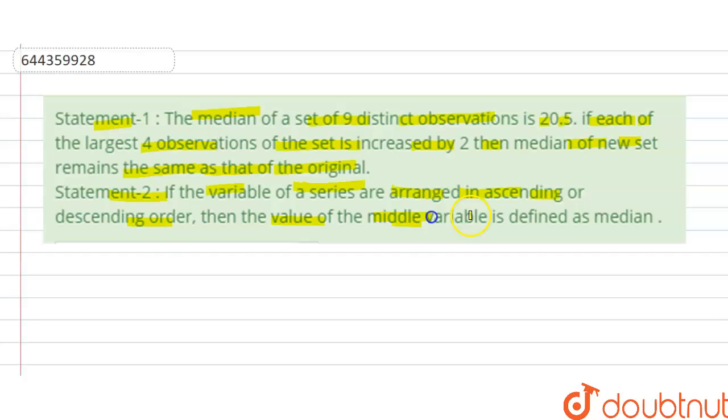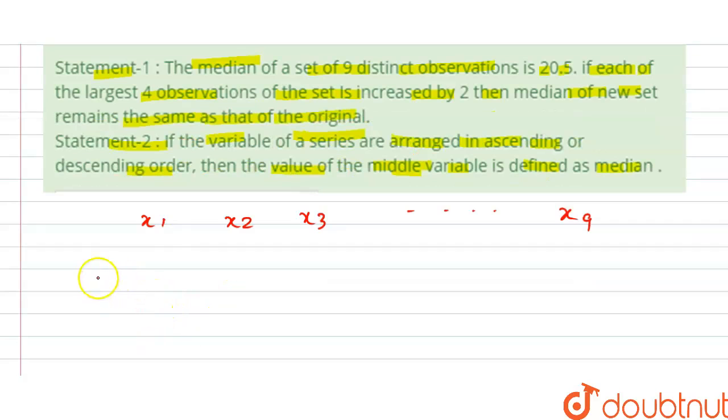So we have 9 distinct observations here: x₁, x₂, x₃, up to x₉. It is given that if we arrange them in ascending or descending order, so let x₁ < x₂ < x₃ ... < x₉. We have arranged them in increasing order.